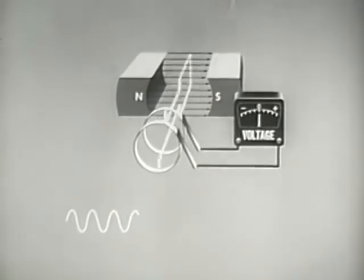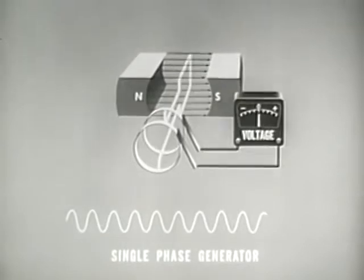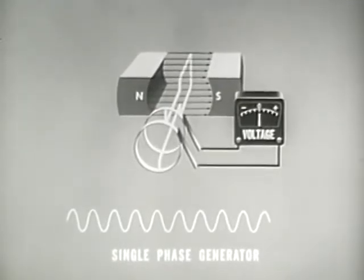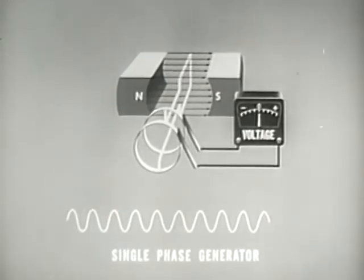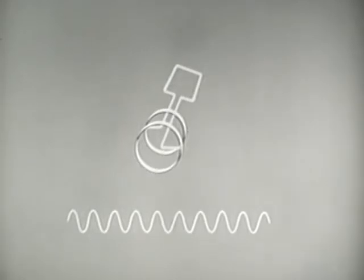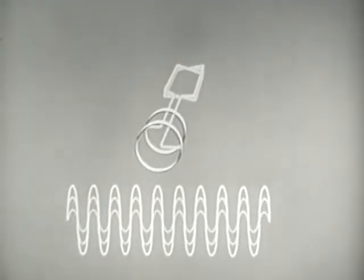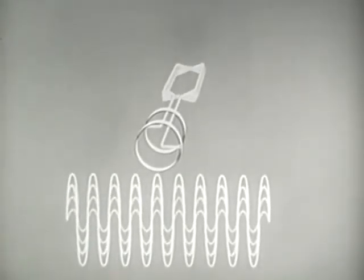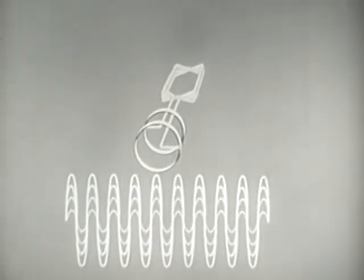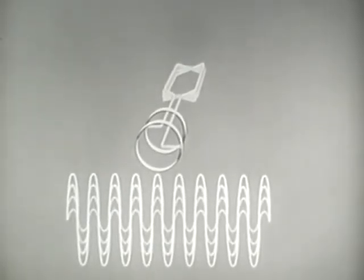There are several different types of AC generators, or as they are sometimes called, alternators. This is an elementary single-phase AC generator. The armature of the single-phase AC generator is wound with many turns of wire. These coils are connected in series so that at any given instant of time, the total voltage induced is the sum of the voltages induced in each individual coil.